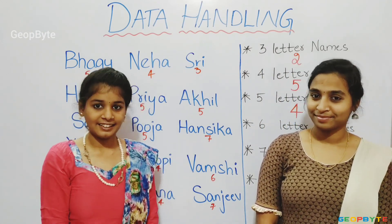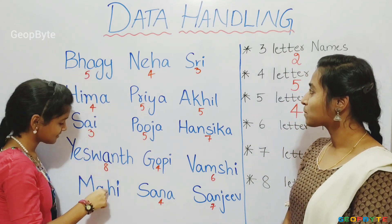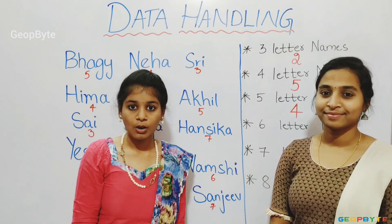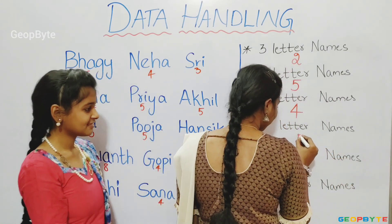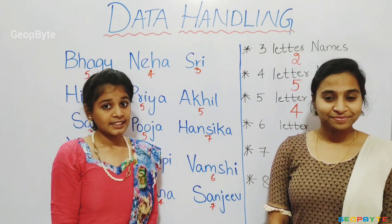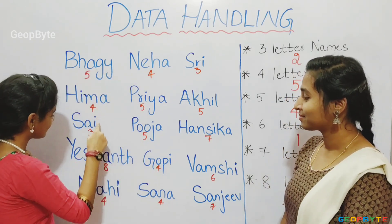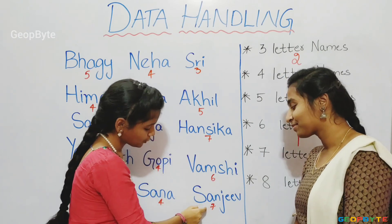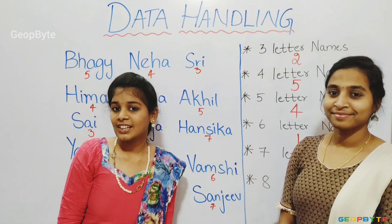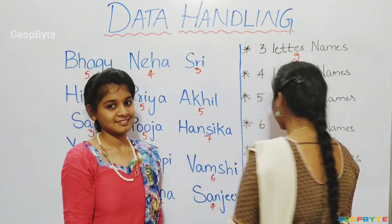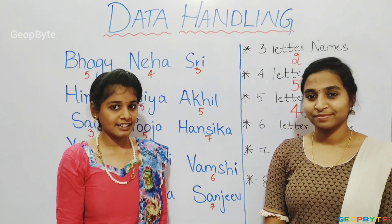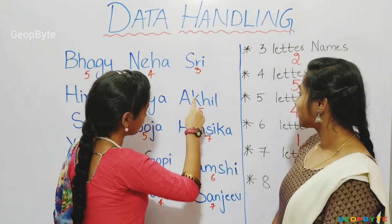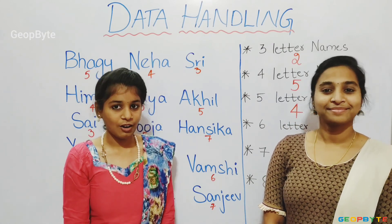Now, let us see six-letter names. One, there is only one name of six letters. Now, let us see seven-letter names. One, two. There are two names of seven letters. Now, let us see eight-letter names. One, there is only one name of eight letters.